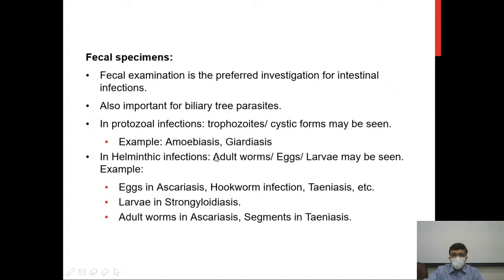For example, in amoebiasis or giardiasis. In helminthic infections, you can expect to see adult worms, their eggs or ova, or larvae. Eggs may be seen in ascariasis, hookworm infections, and taeniasis. Larvae are most commonly seen in Strongyloides stercoralis infection. Adult worms may be seen in many infections including ascariasis. Segments — pieces of the worm's body — may be seen in segmented worms such as tapeworms, for example in taeniasis.